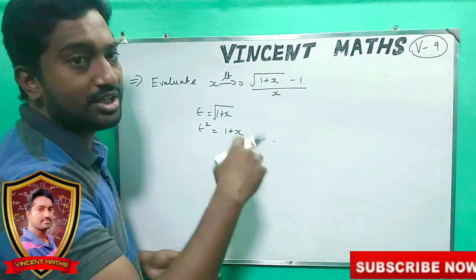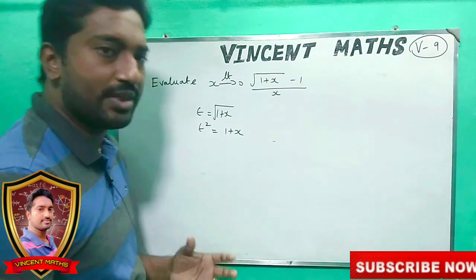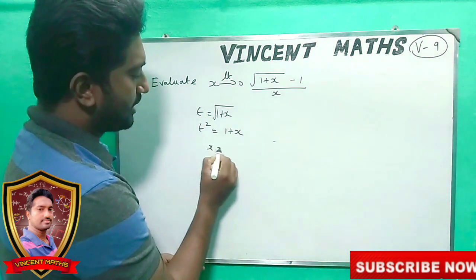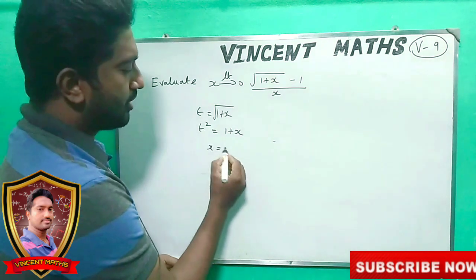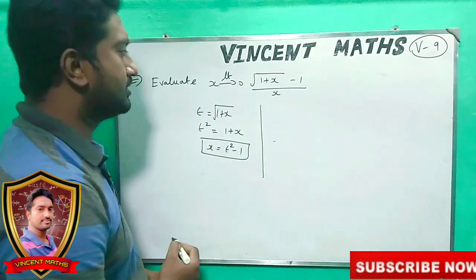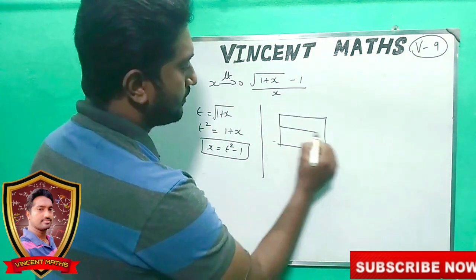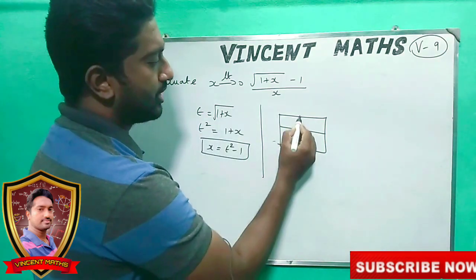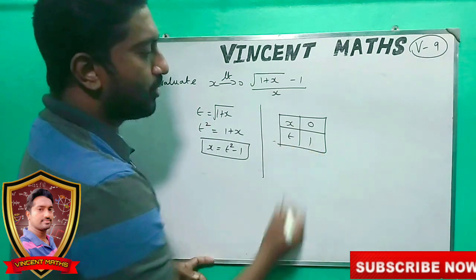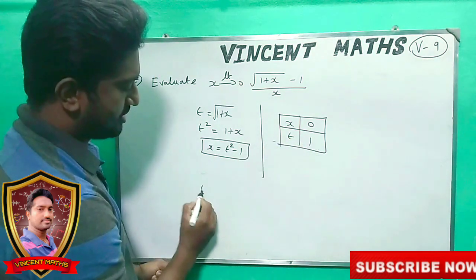Let's change the limit. As t goes to the limit, t will change the variable. Then x equals t squared minus 1. Next, we change the limit: limit x goes to 0. When x equals 0, substituting into t equals 1 plus x gives t goes to 1.